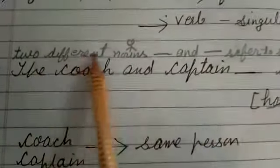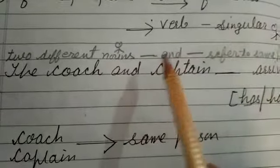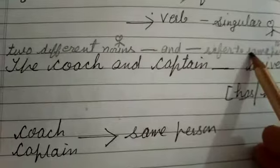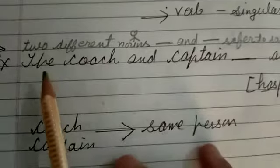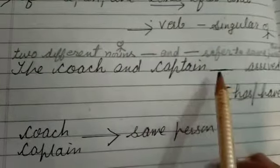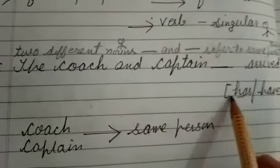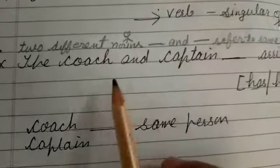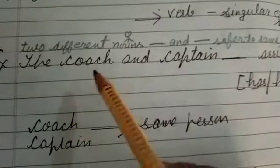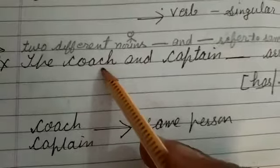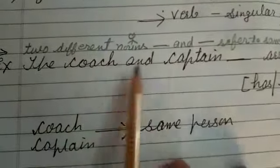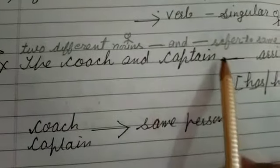Rule: If two different nouns are joined by 'and' but they refer to the same person, the verb should be singular. For example: 'The coach and captain __ arrived.' We get confused thinking coach and captain are two different persons. But no — coach and captain can refer to one person. So: The coach and captain has arrived.